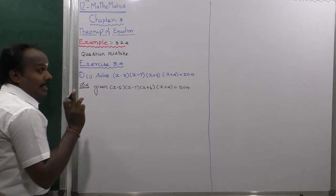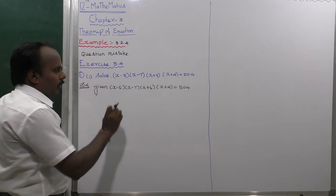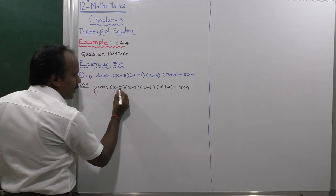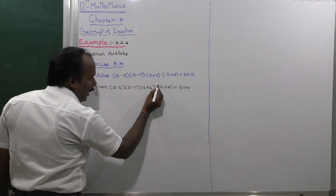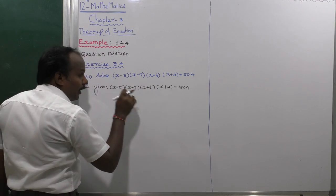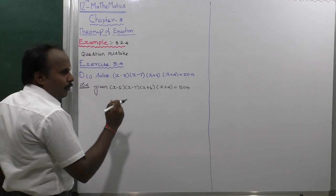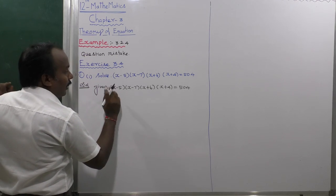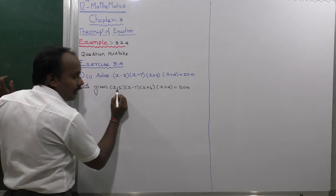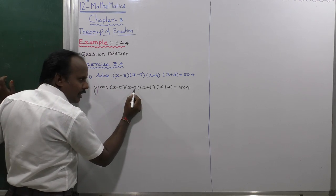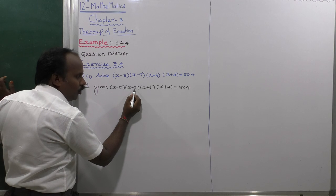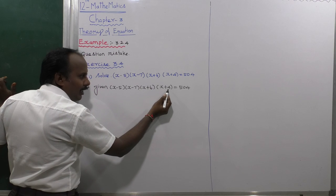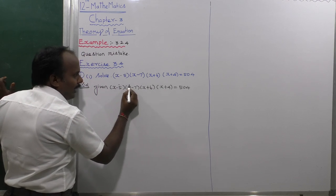An important point: this cannot be solved directly by inside multiplication. For inside multiplication, any two constants adding and the remaining two constants adding must give the same number. For example, minus 5 and minus 7 add to minus 12; and 4 and 6 add to 10 — these are different, so this grouping is not eligible.